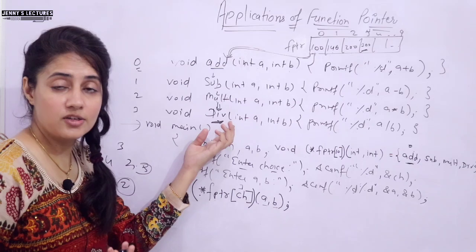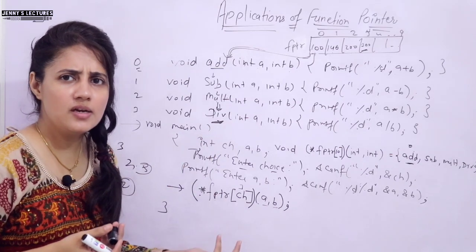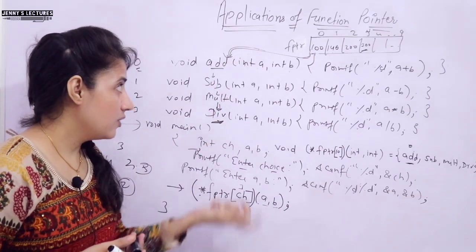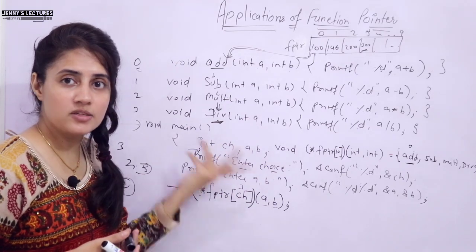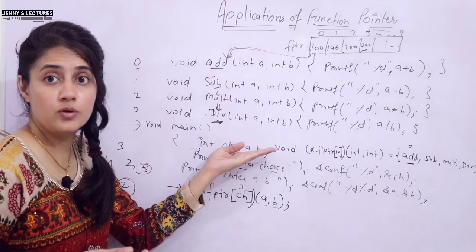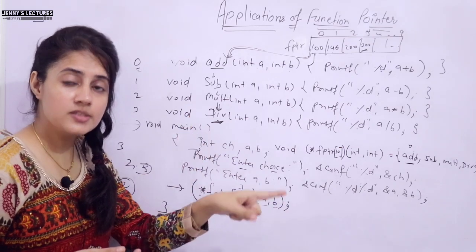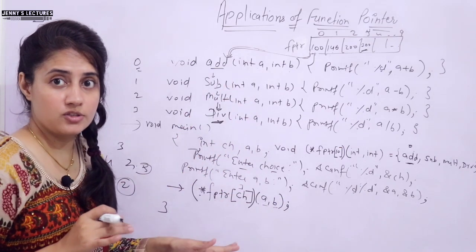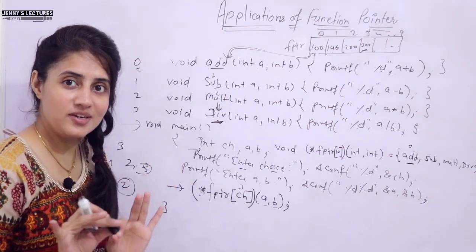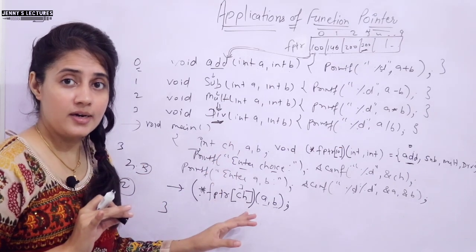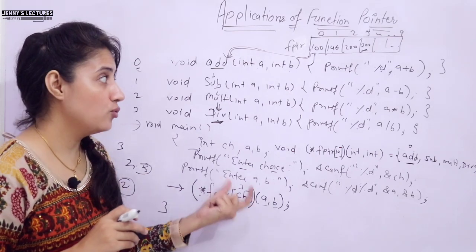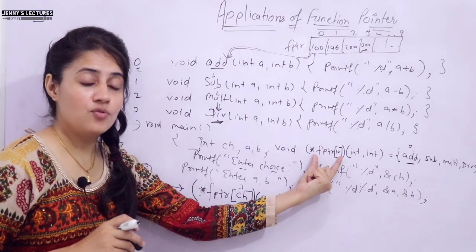Using an array of function pointers, we can access these functions at runtime according to the user's choice — whether addition, subtraction, multiplication, or division. At compile time we don't know which function will be called; at runtime the user enters the choice and then the corresponding function is called. This is one more application of function pointers, and this is how you declare an array of function pointers.